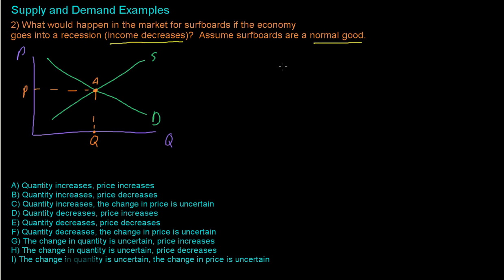Well, we know that for a normal good, demand increases when income increases and demand decreases when income decreases. So here we have income decreasing, which means that demand is also going to decrease.